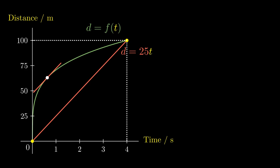In what seems to be a rather strange move, we're going to define the function h of t to be the difference between f of t and 25t. This measures the difference between the actual trajectory and the constant speed trajectory.